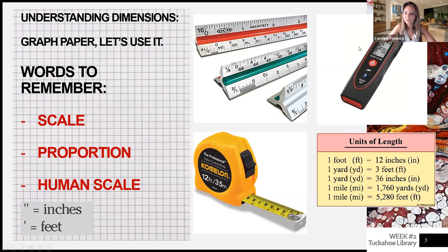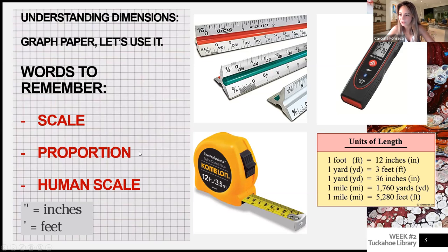Some of you may have seen this — the architect's scale ruler, which gives us different scales: one-sixteenth, three-sixteenths, one-eighth, one-half inch, one-and-a-half, and three-eighths, for example. That's how we represent drawings to fit in a construction set that will be used by the contractor to build. And this is the tape measure we use to get dimensions from the real world into drawings.